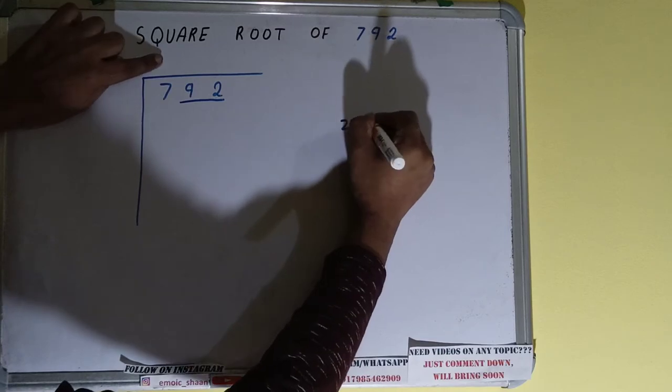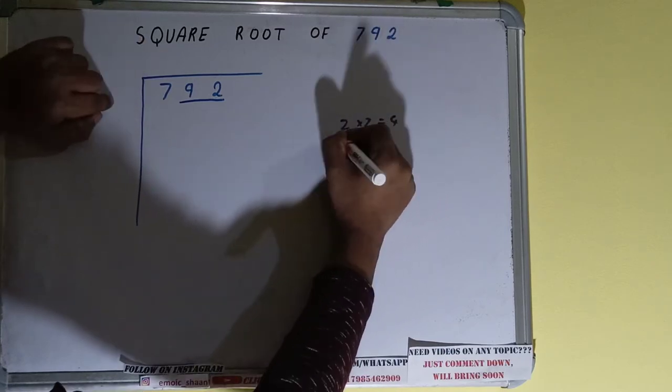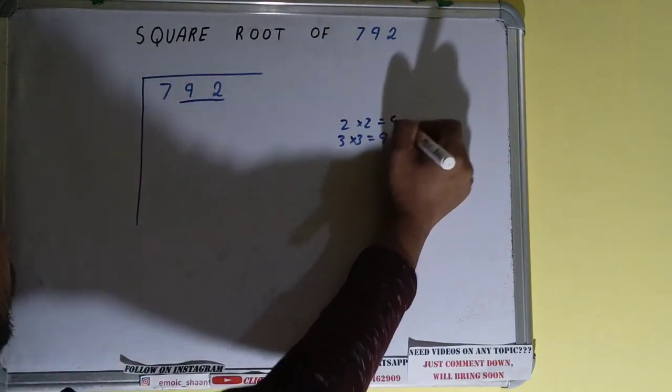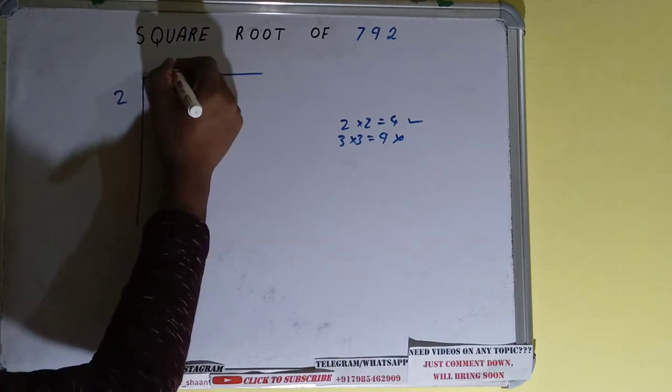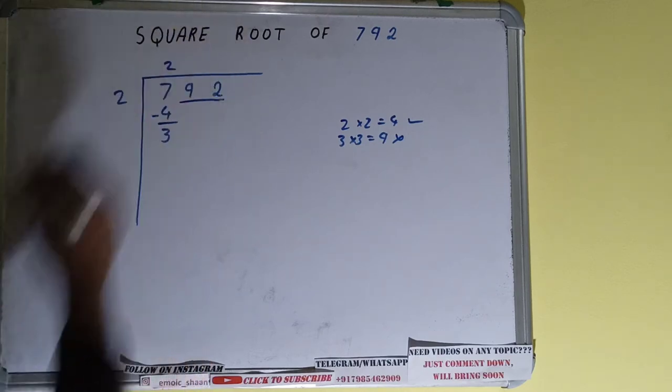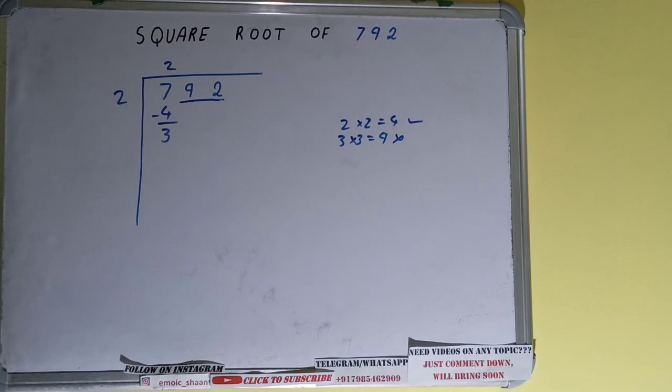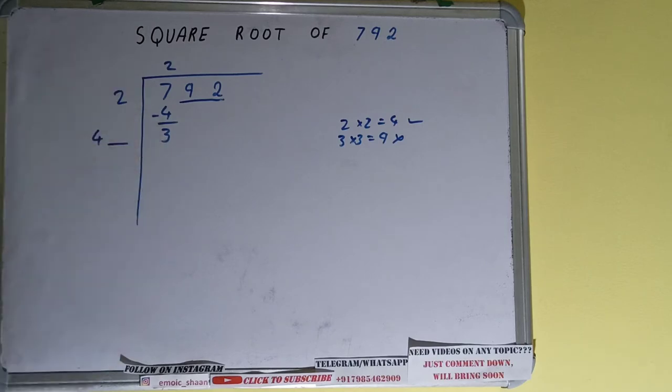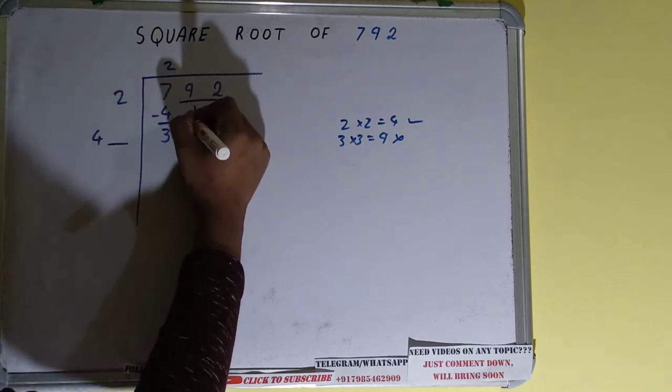If we write 2 here and 2 here it will be 4. If we write 3 here and 3 here it will be 9. We cannot use 9 because it is greater than 7, so we have to use this 4. So 2 here and 2 here will be 4, subtract and 3 will be left. Now we did 2 into 2, so 2 plus 2 will be 4, and keep one digit extra. We need to make this number big so that we can divide.